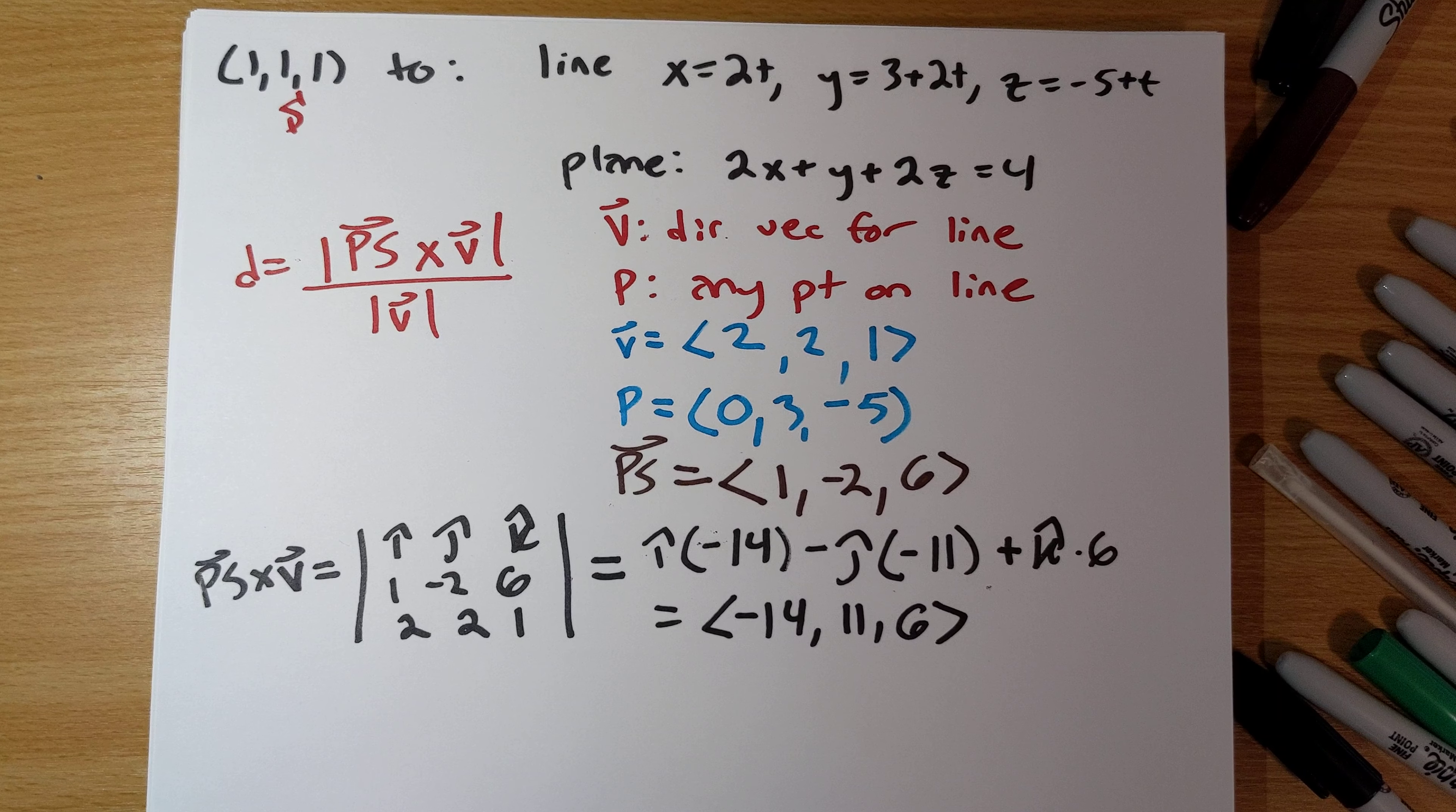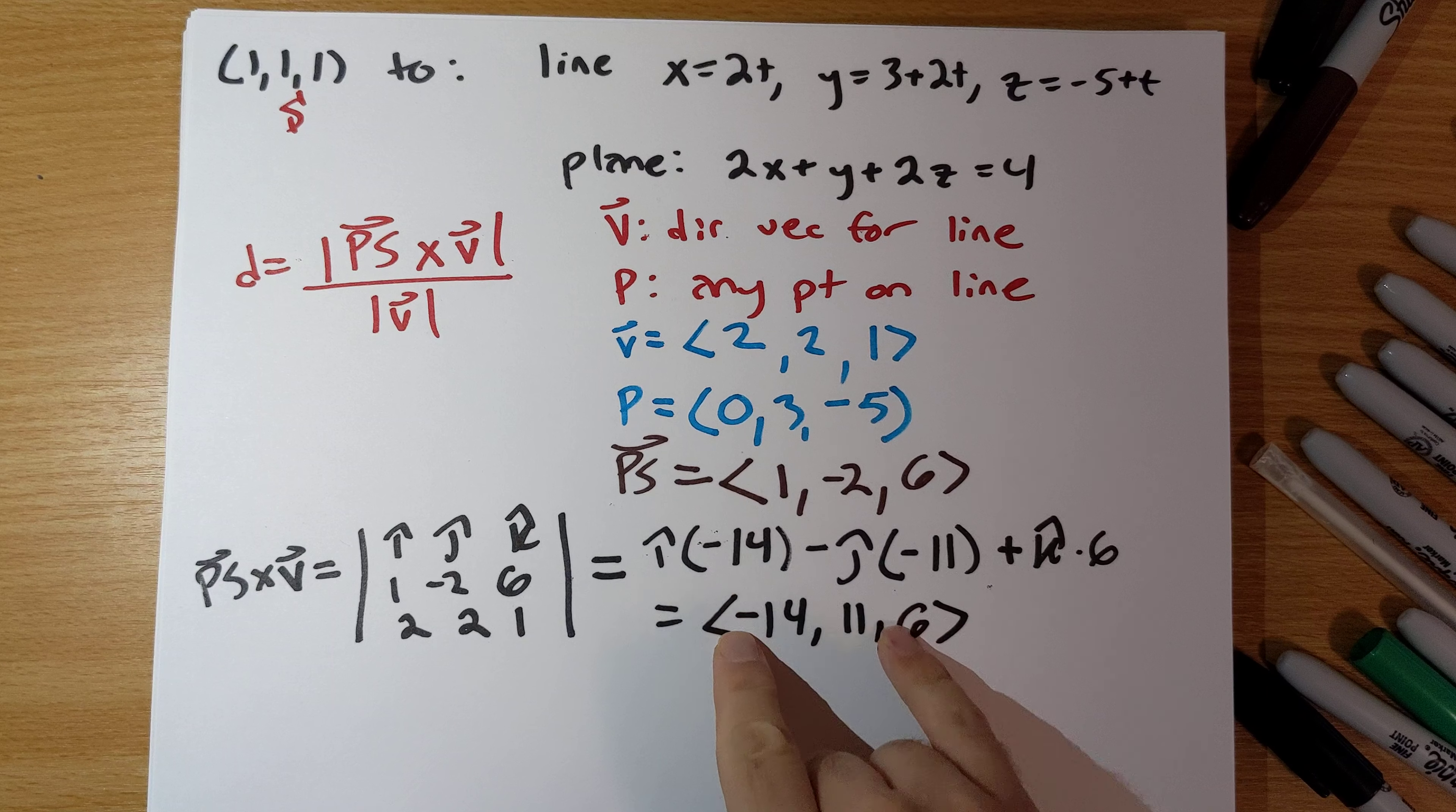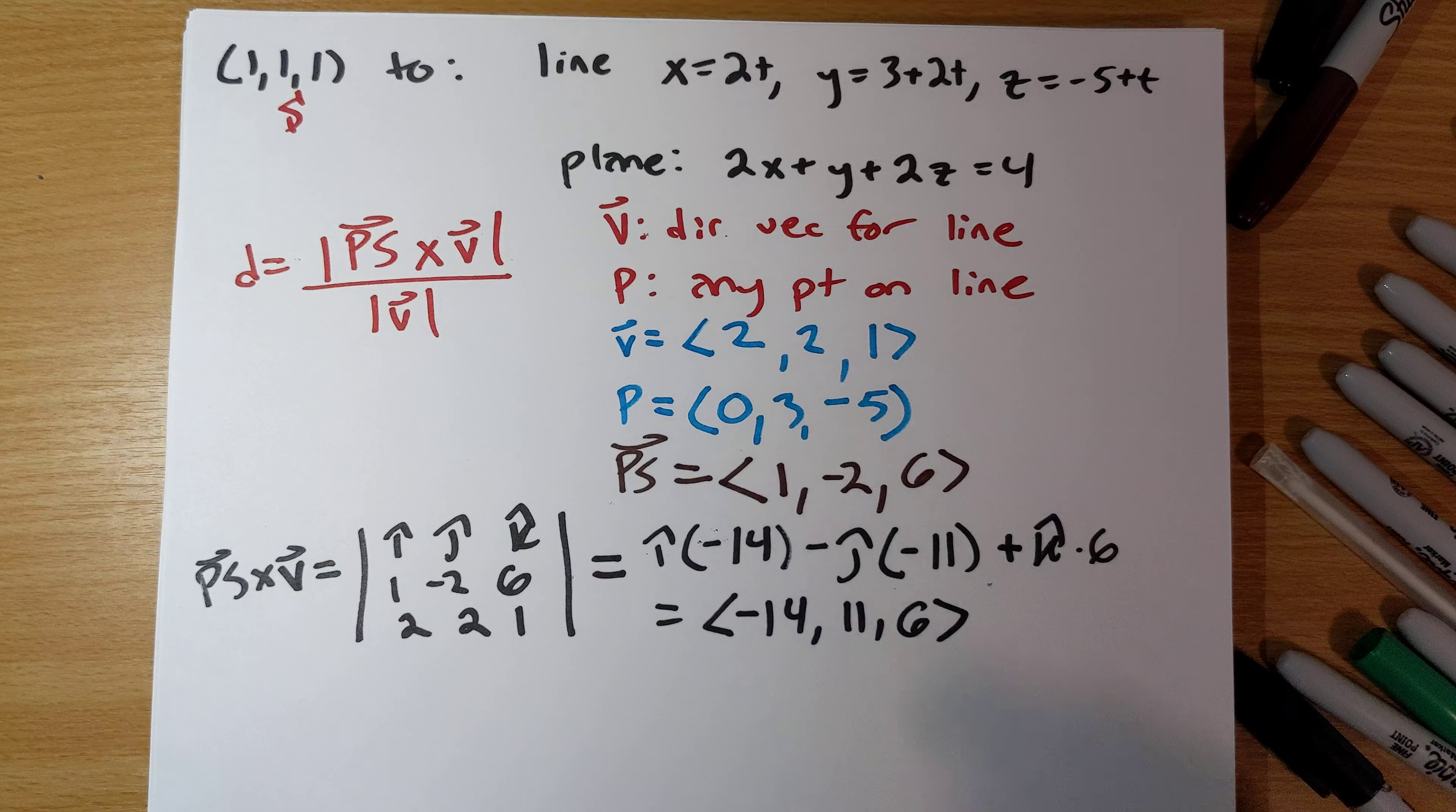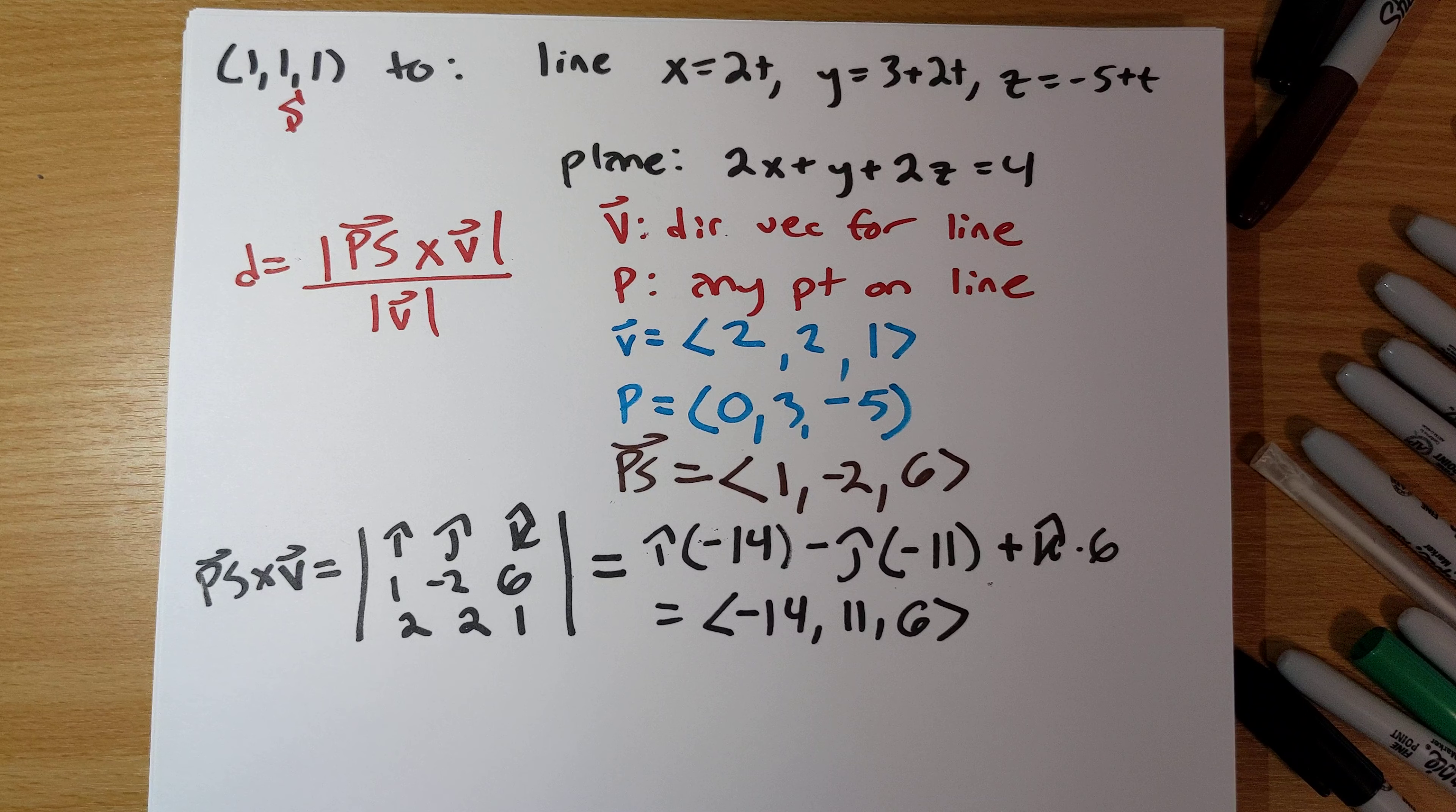As always, it can be good practice here to check that if you do the cross product dotted with each of PS and with v, check that, yes, you do get 0 in each of those cases.